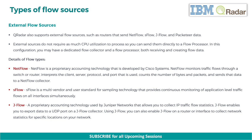Next, we have SFlow. SFlow is a multi-vendor and user standard for sampling technology that provides continuous monitoring of application-level traffic flows on all interfaces simultaneously. Next, we have JFlow. JFlow is a proprietary accounting technology used by Juniper Networks that allows you to collect IP traffic flow statistics. JFlow enables you to export data to a UDP port on a JFlow collector, and you can also enable JFlow on a router or interface to collect network statistics for specific locations on your network.